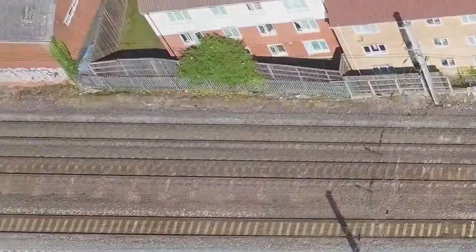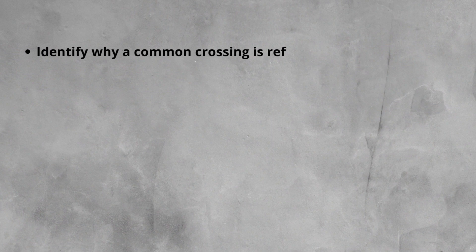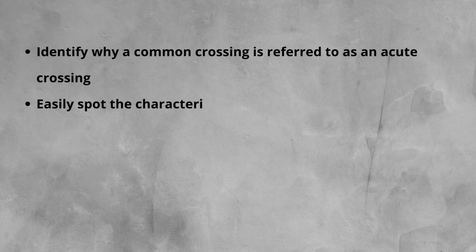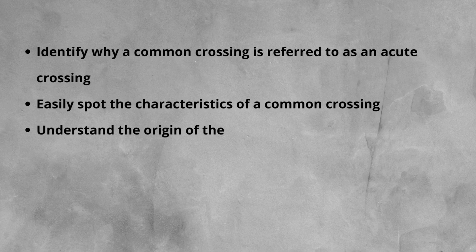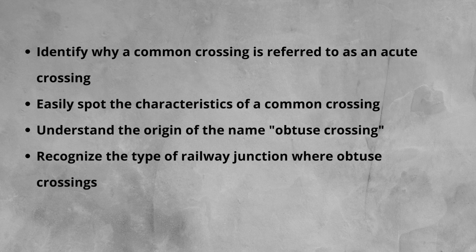By the end of this video, you will be able to identify why a common crossing is also referred to as an acute crossing, easily spot the characteristics of a common crossing, understand the origin of the name obtuse crossing, and finally recognize the type of railway junction where obtuse crossings are typically found.